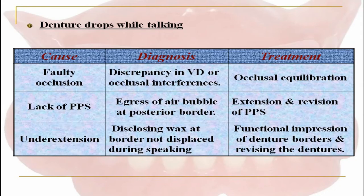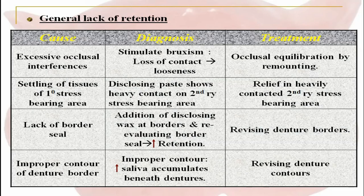The denture drops while talking: the cause could be faulty occlusion, lack of posterior palatal seal, and under-extensions. These are diagnosed with discrepancy in vertical dimension or occlusal interferences; treatment is occlusal equilibration. For lack of posterior palatal seal, air bubbles present at the posterior border; treatment is extension and revision of the posterior palatal seal. For under-extension, disclosing wax at the border is not displaced during speaking; treatment is functional impression of denture borders and revising the dentures.